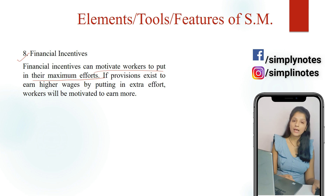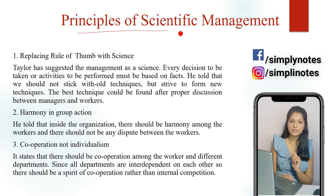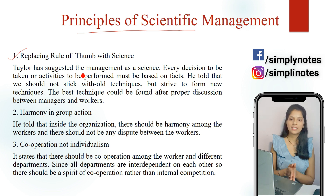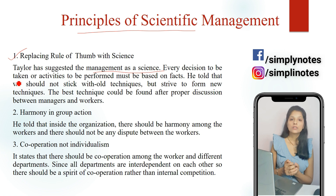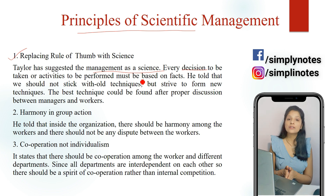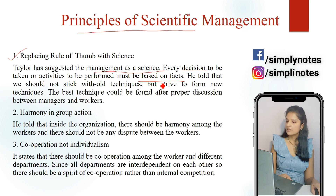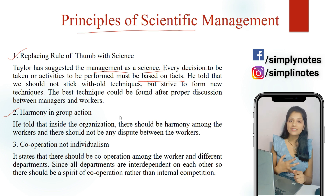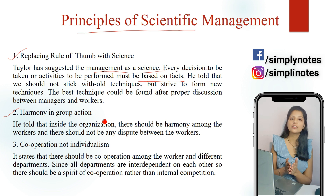Now let's talk about the principles of scientific management. The first principle is replacing rule of thumb with science. Taylor suggested that management is a science, so all activities and decisions should not be based on trial and error, but on facts. The second principle is harmony and group action — workers mein proper coordination hona chahiye, proper understanding honi chahiye, aur ek give and take relation hona chahiye so that the group as a whole can contribute to maximum output.